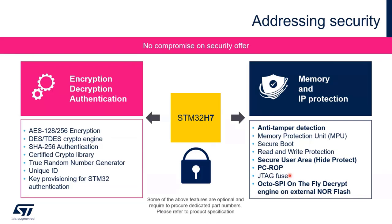Let's tackle security. H7 supports AES-128 or 256 encryption and key provisioning for STM32 authentication, part of STM32Trust security for cyber protection. It supports on-the-fly decryption (OTF-DEC) — enabling you to encrypt code and execute it from external memory. Secure Firmware Install (SFI) allows you to order standard products anywhere in the world and securely program your devices through an untrusted EMS or third-party manufacturer, preventing unauthorized access to your code or firmware.